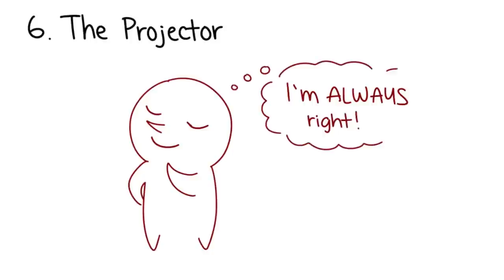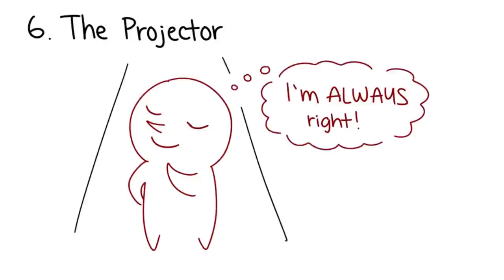Number 6: The Projector. The Projector thinks they're perfect and that others have all the flaws. They take no ownership because they're never, ever wrong.